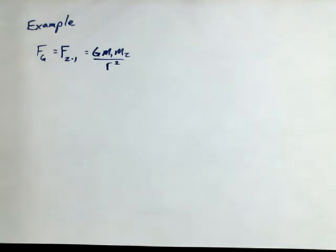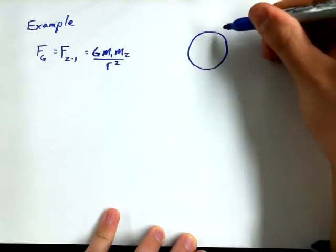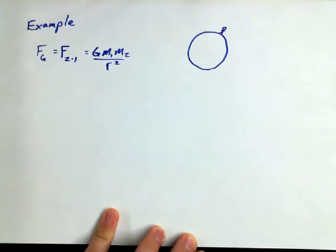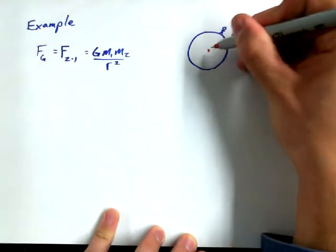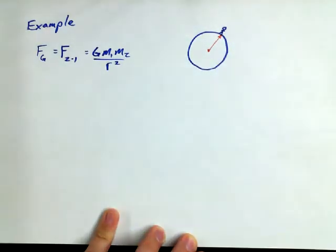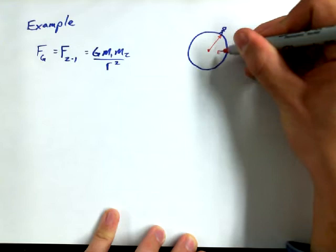A good example of this might be somebody standing on the surface of Earth. Now this is obviously not to scale because this looks a little bit like Little Prince. There's a person standing on the surface of the Earth, and then we have an R value between the center of the Earth and the person, and we might call that the radius of the Earth.